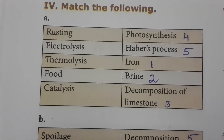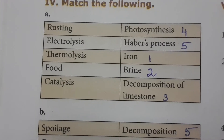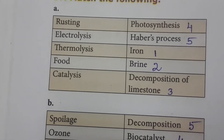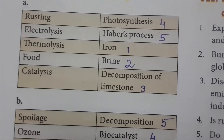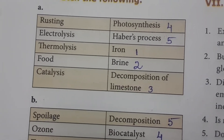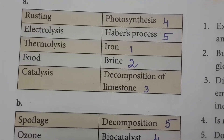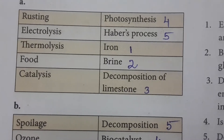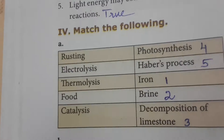Match the Following: Rusting happens only in iron substances, so iron is matched with rusting. Electrolysis happens in brine — when you apply electricity to a brine solution, you get chlorine and hydrogen gases. Thermolysis means temperature leads to lysis of something — decomposition of limestone by applying heat is thermolysis. Food is produced by photosynthesis — the process by which plants produce food from water and CO₂ in the presence of sunlight.